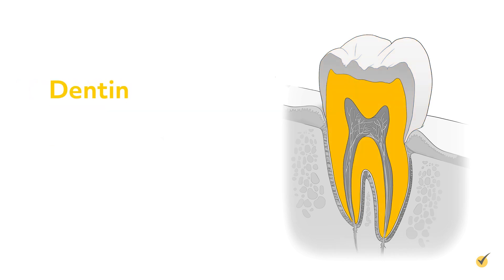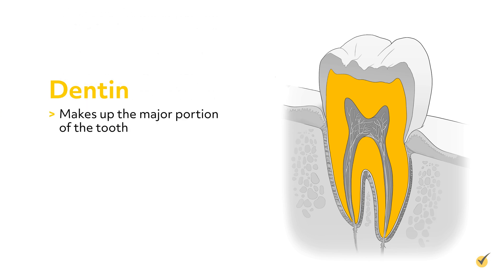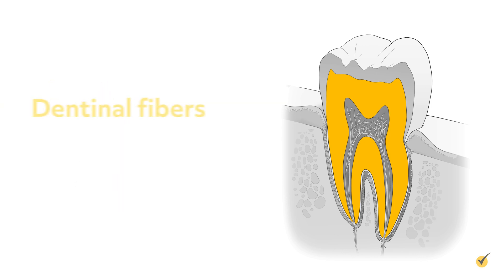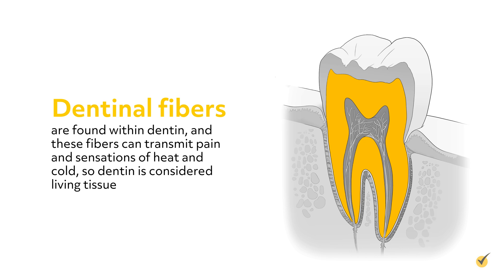The next layer of the tooth is the dentin, which makes up the major portion of the tooth. Dentin extends from the crown to the roots, and it comprises somewhat elastic mineralized tissue that is harder than bone but not as hard as enamel. Dentinal fibers are found within dentin, and these fibers can transmit pain and sensations of heat and cold, so dentin is considered living tissue.